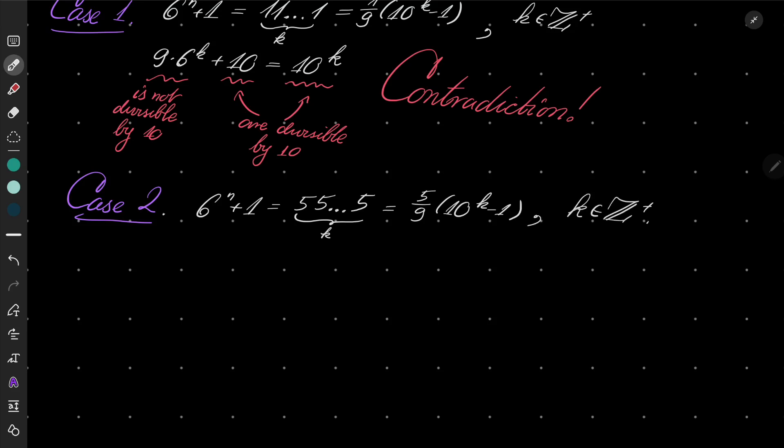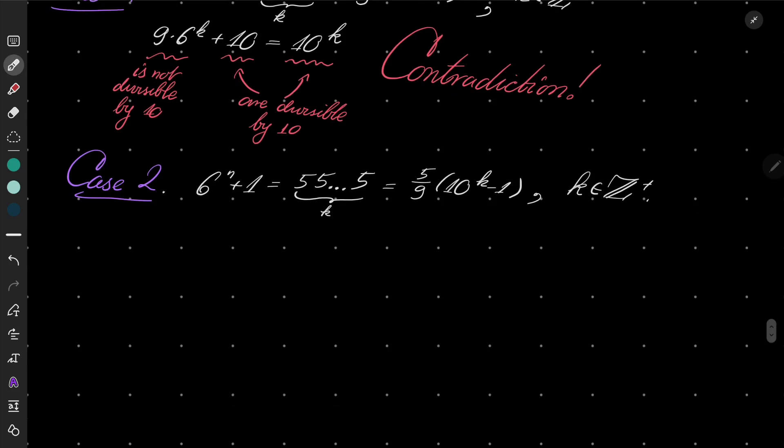So it can be written as 5 over 9 times 10 to the power k minus 1, where k is a positive integer. I can write 9 times 6 to the power of n plus 14 equals 5 times 10 to the power of k.